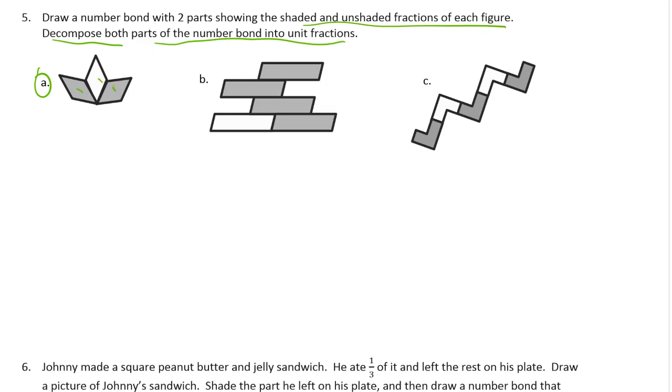So a number bond with two parts showing the shaded and unshaded fractions of each figure. We just did that on the first page. So I'm looking at this part. This one A. And there's one, two, three equal parts. That's thirds. So I need a number bond here. One whole. And there are two thirds shaded. And one third not shaded. And then it says decompose both parts of the number bond into unit fractions. So one third here is already a unit fraction. So I don't have to do anything to that one. But I'm going to decompose this two thirds into unit fractions of one third each. And that's how these are going to look.